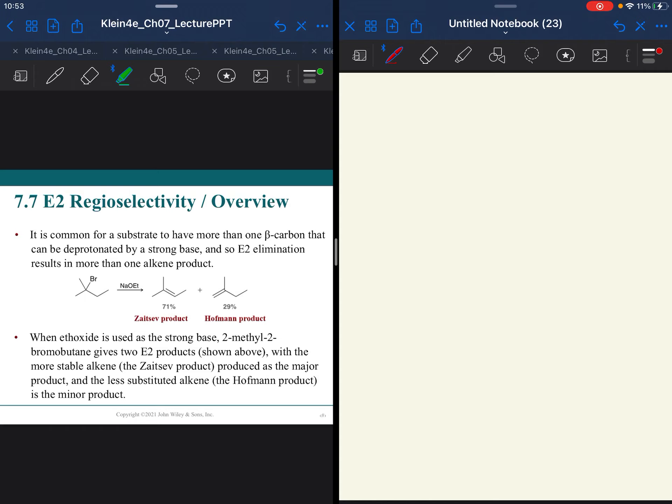Where this is really going to affect us and what we are doing in this chapter is the regioselectivity of the E2 mechanism. Regioselectivity. So when you have beta-hydrogens that could lead to different products, because think about this starting material.